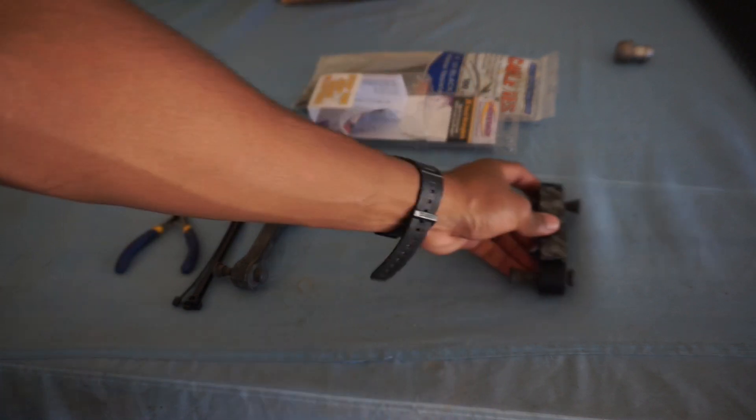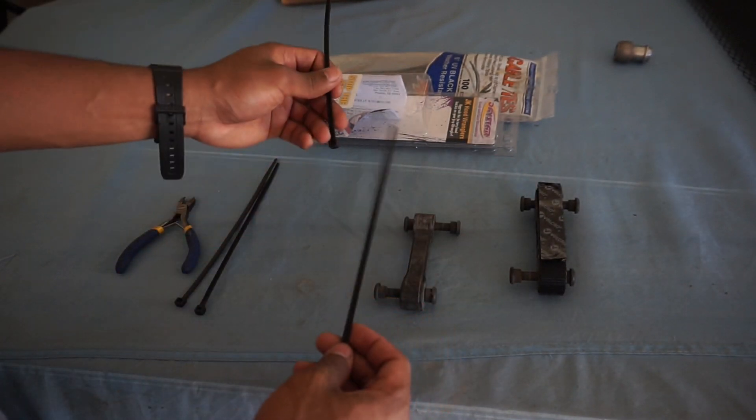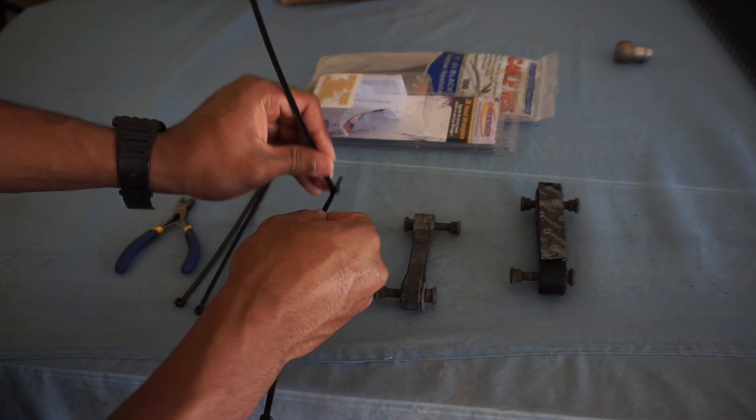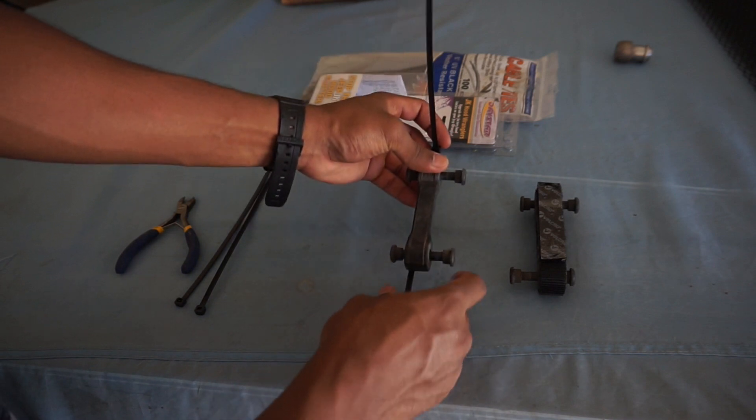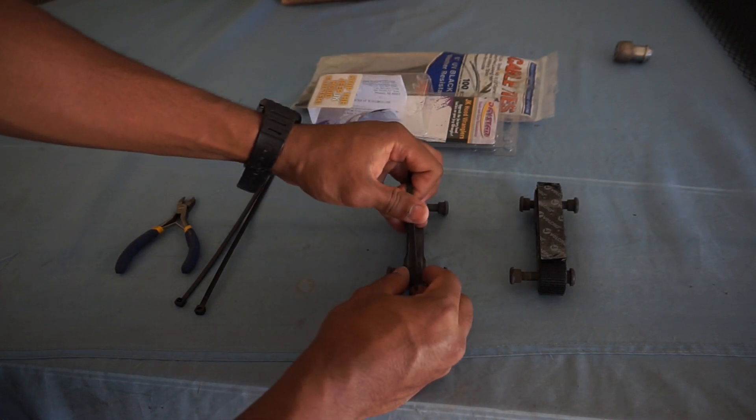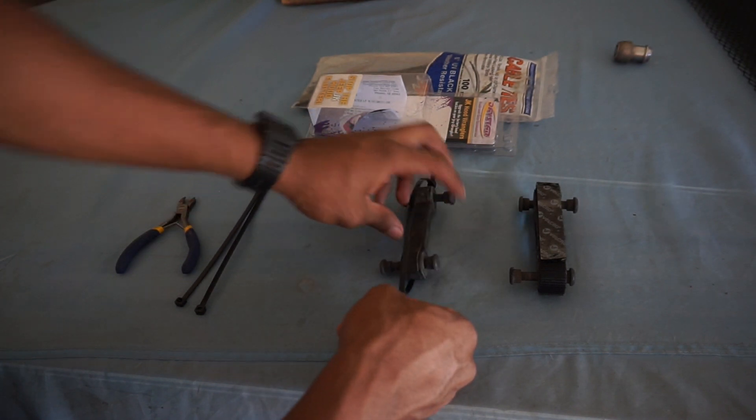The next method is a zip tie method. So you can get zip ties again at really any store like Walmart or Home Depot or something like that, and basically you want to wrap your hood latch in the zip tie just like the velcro method.